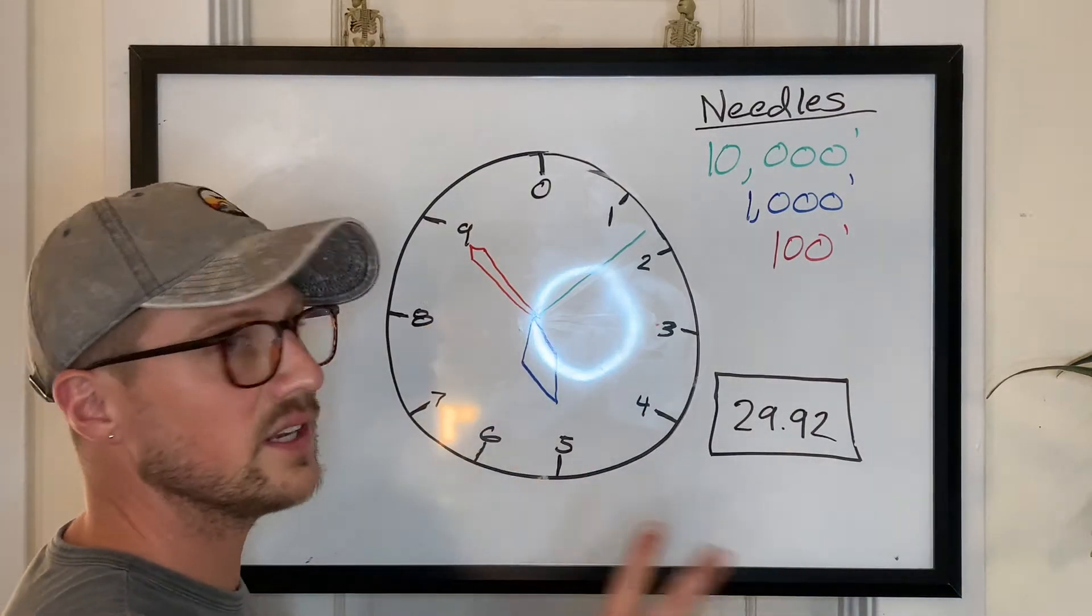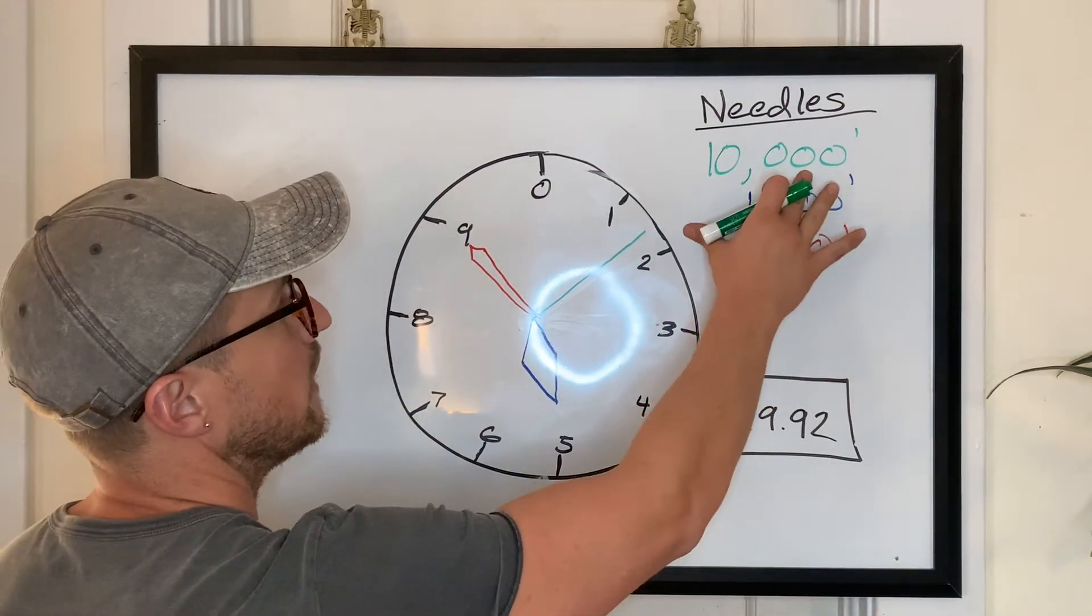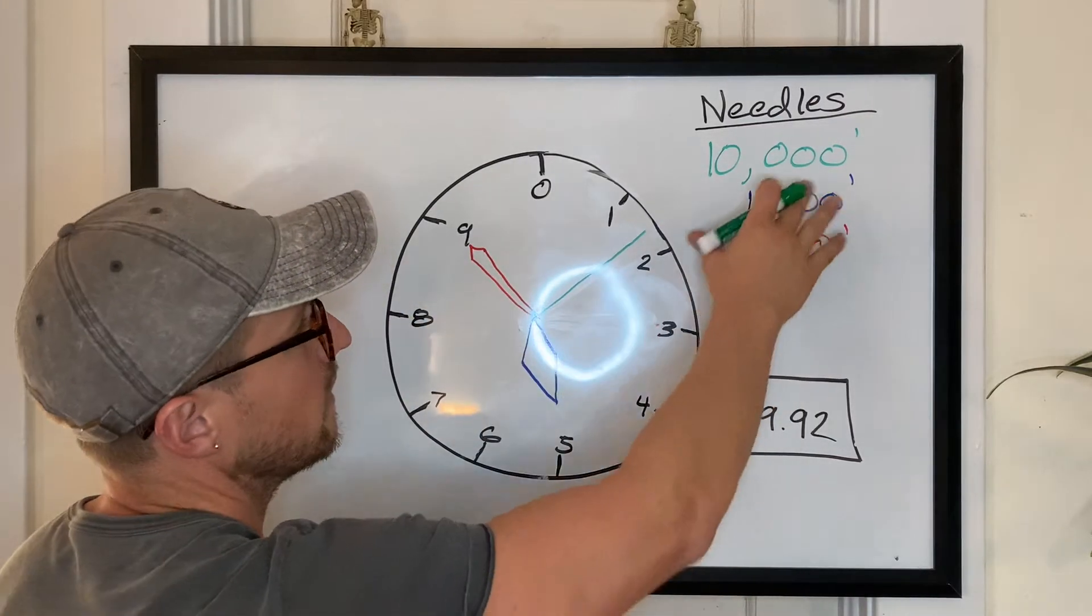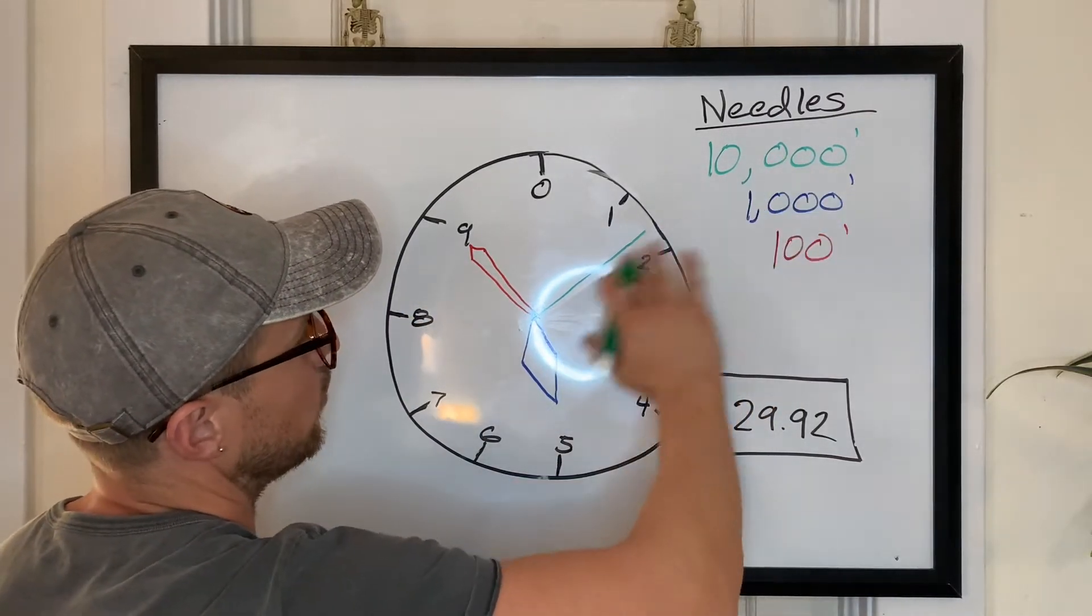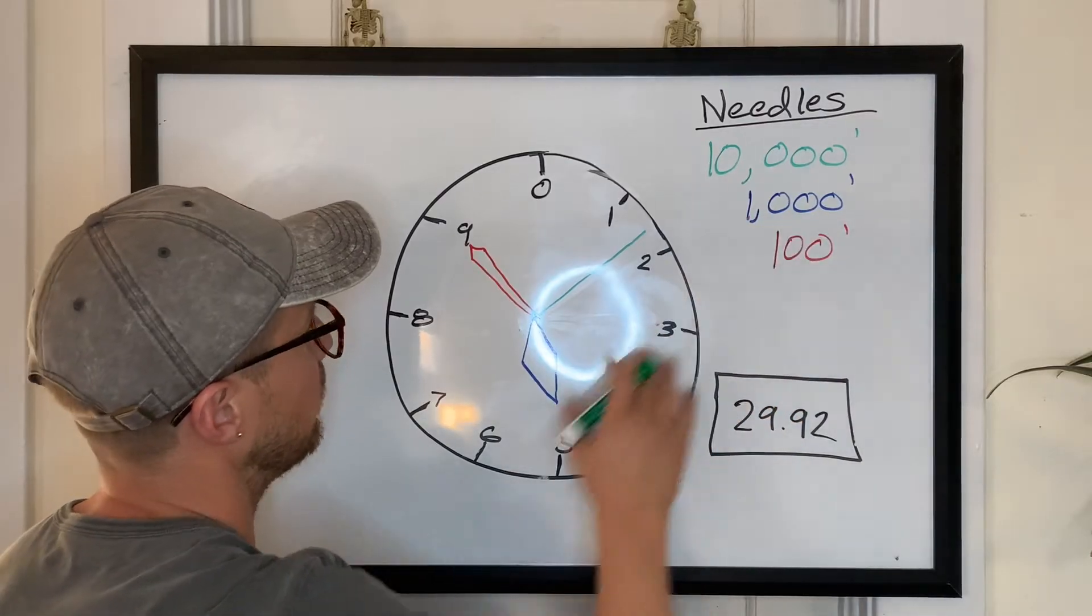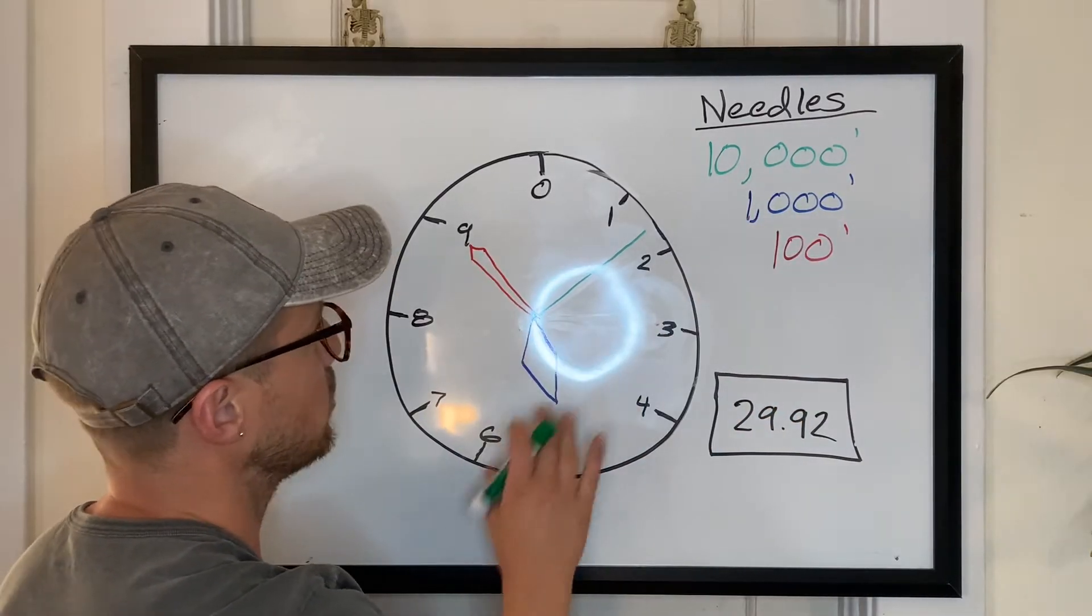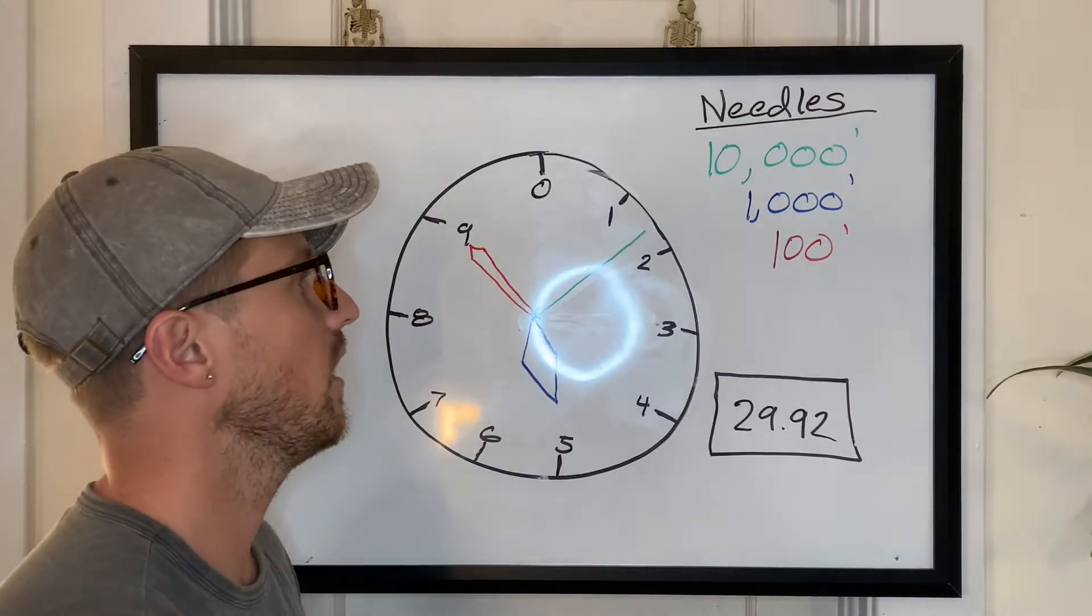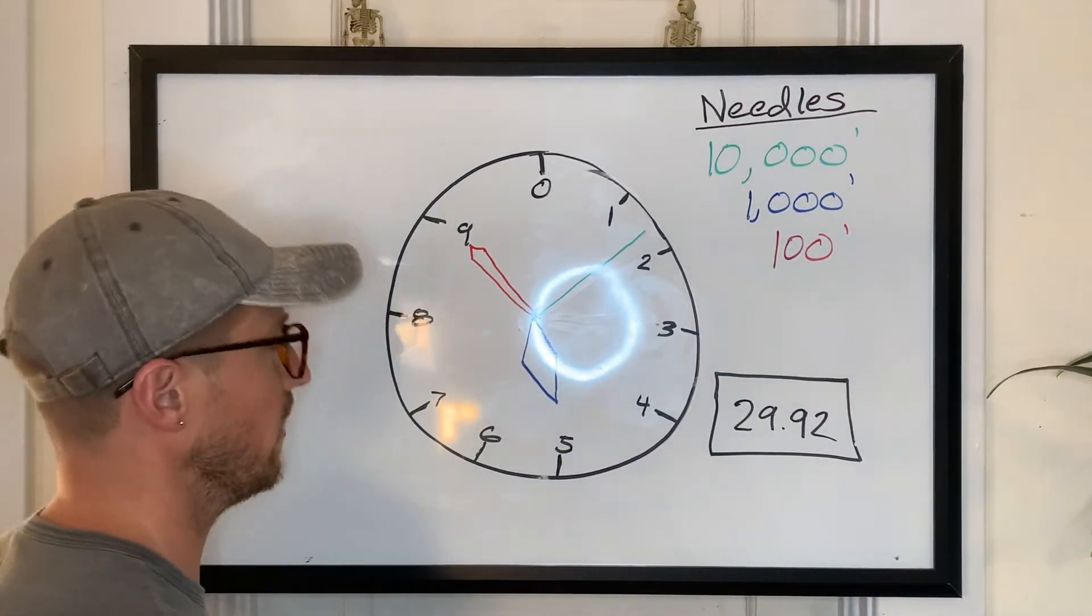We have three needles on the altimeter. They're not colored on your actual altimeter, but they do have different shapes and sizes. So the 10,000 foot needle, the real skinny one, the thousand foot needle is gonna be this kind of fat and short one, and then this thicker, longer one is gonna be the hundred foot needle.